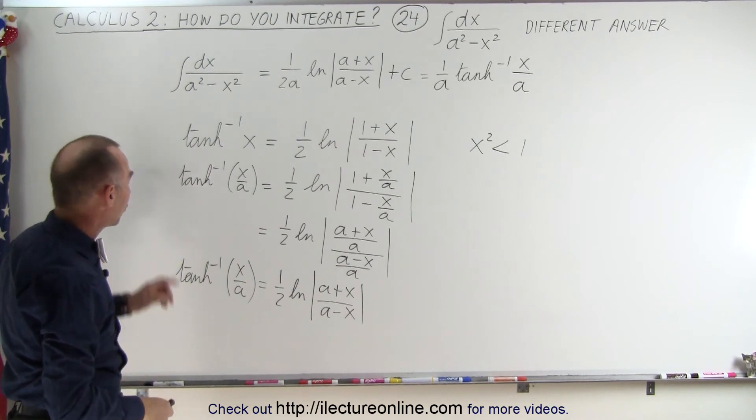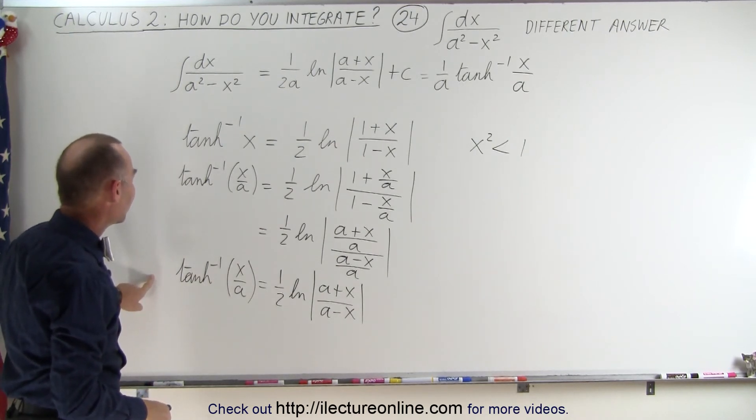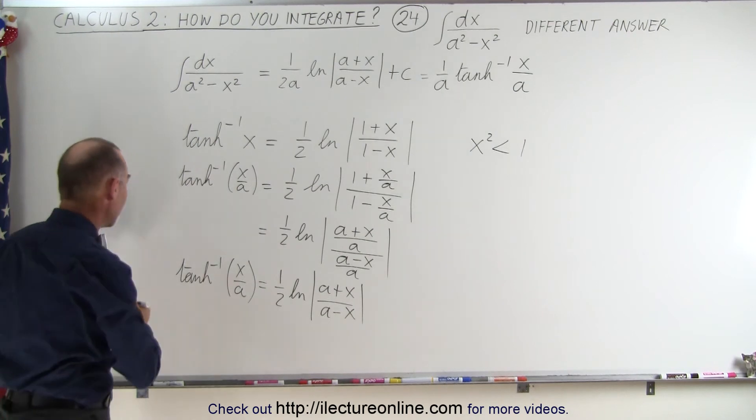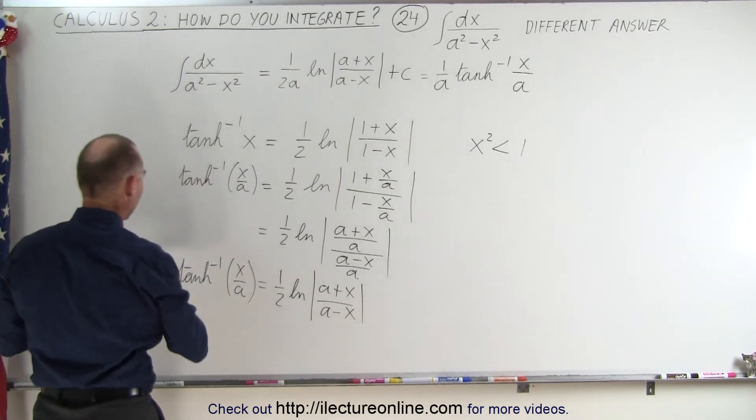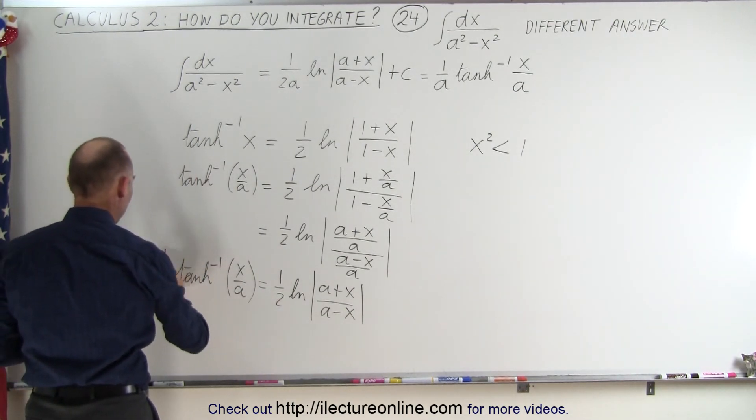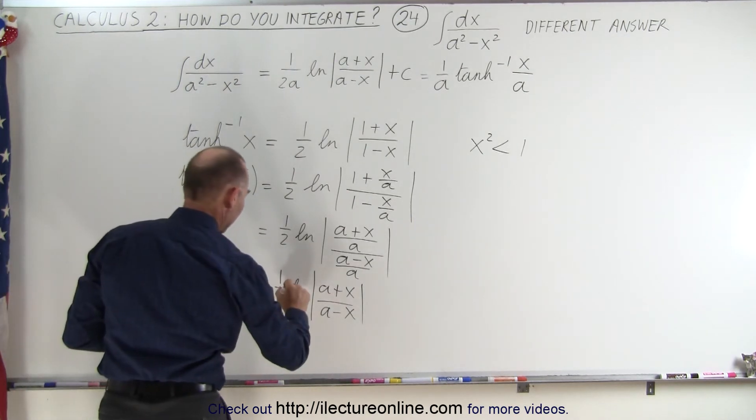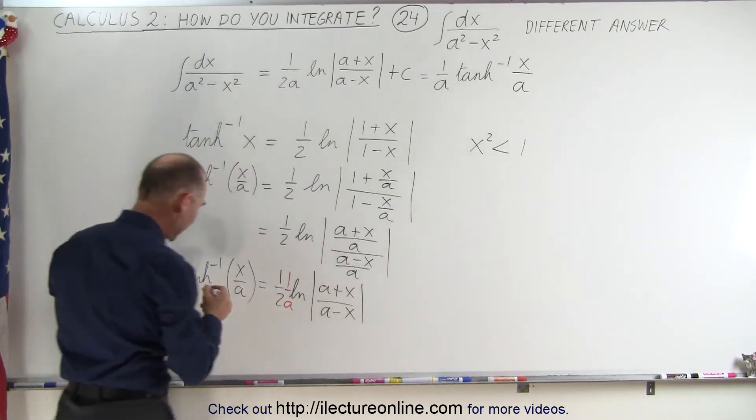So if I write this as one over a on the left side, I can then write this as one over a on the right side. Let me use a different color. So I'm going to multiply this by one over a on the left side, and then I can multiply this by one over a on the right side.